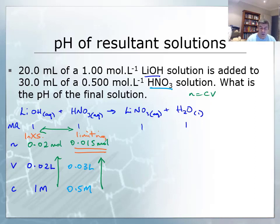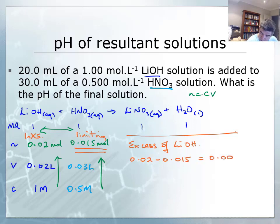What I want to do then is look at the one that's in excess because that's going to be the critical one. As a result of this, I have an excess of lithium hydroxide. The number of moles I have is 0.02 minus 0.015, which is going to be 0.005 moles.